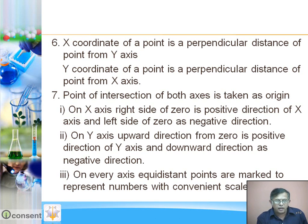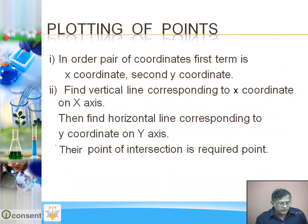The upward direction on Y axis is positive, and the downward direction of Y axis is negative. On every axis, equidistant points are marked to represent numbers with convenient scale. For example, 0.5 centimeter equals 1 unit, or 1 centimeter equals 1 unit, or 2 centimeters equal 1 unit, as per our requirement.